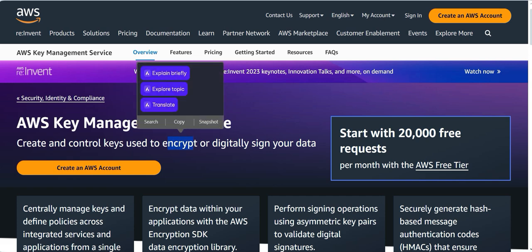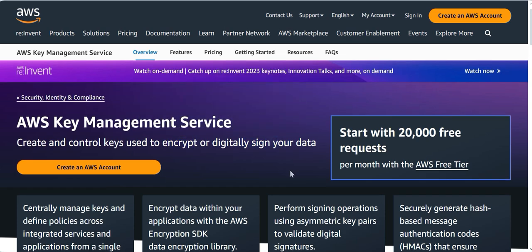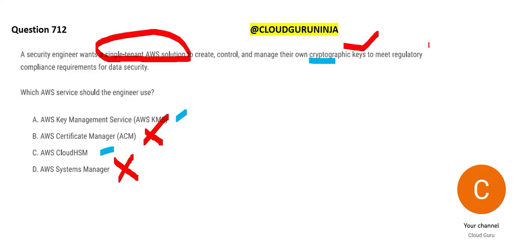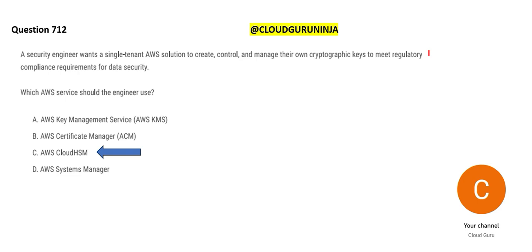KMS is used for key management and encrypting or digitally signing your data, but it is not a single-tenant solution. Single tenant means one set of hardware is dedicated to one customer — in a normal cloud environment, you and other companies share the same hardware via virtualization. With CloudHSM, you are the owner of the dedicated hardware. So CloudHSM — option C — is correct.